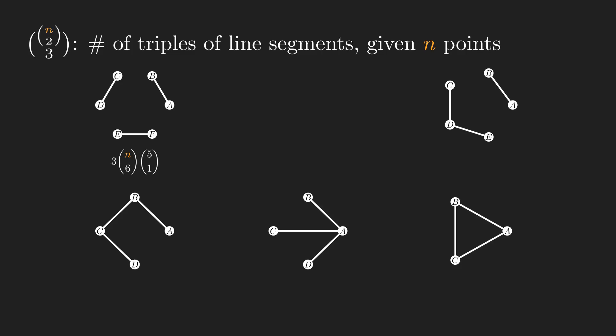For the second case, first we select 5 points out of n. We then select the point that is shared between the 2 line segments. After that, we select the 2 points out of the remaining 4 and connect them to the shared point. Finally, we select 2 points out of the remaining 2 points for drawing the isolated line segment.